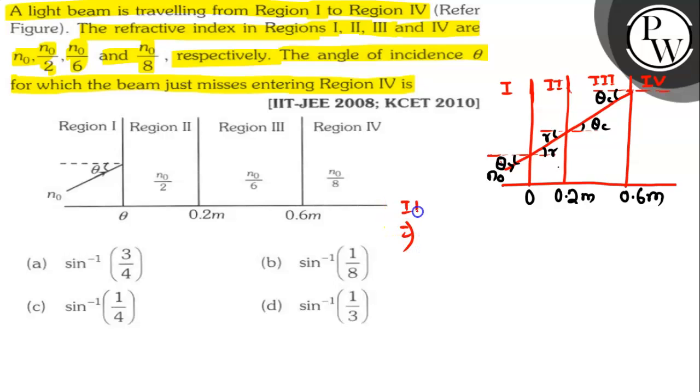For the interface of region 3 and 4, θc is equal to sin inverse 3 by 4.